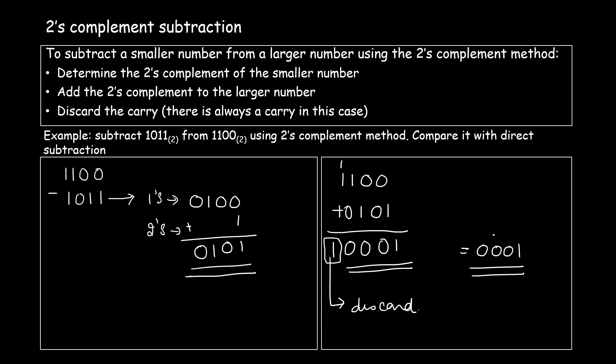So 0001 is the result in binary form — that is how you perform 2's complement subtraction. If you want to cross-check whether the result is correct, you can verify it by direct subtraction. So let's directly subtract 1011 from 1100.